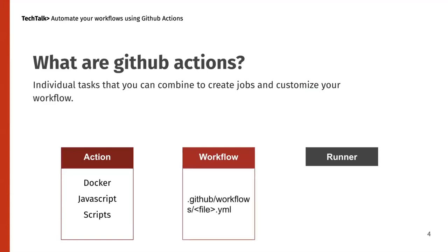A workflow is the file where you describe how to perform a particular workflow. It includes various steps — for example, if you want to build your project, you need to pull your code, compile it, and test various actions. You can specify everything step by step in this file. This file is basically located in a folder named .github, followed by workflows, and a file with a .yml extension.